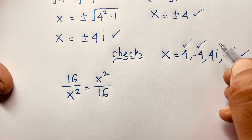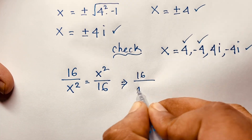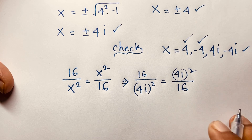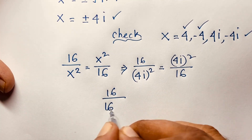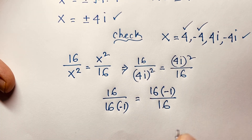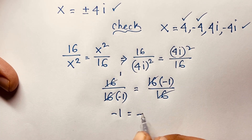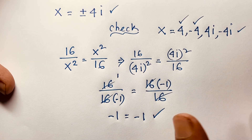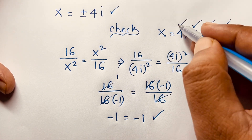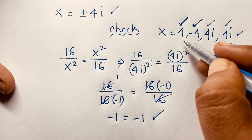For x equals 4i: 16 over (4i) squared equals (4i) squared over 16. Since i squared equals negative 1, this gives 16 over negative 16 equals negative 16 over 16, so negative 1 equals negative 1 — both sides are equal. Similarly for x equals negative 4i, both sides give negative 1. So all four answers are confirmed: x equals 4, x equals negative 4, x equals 4i, and x equals negative 4i.